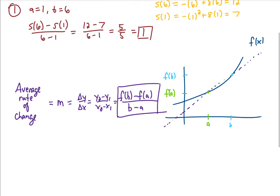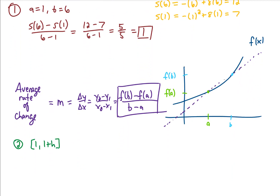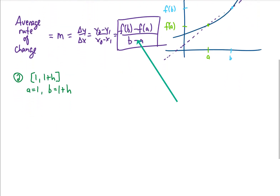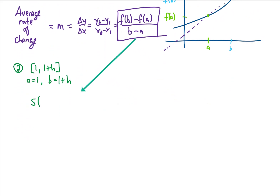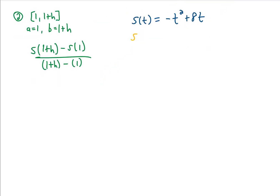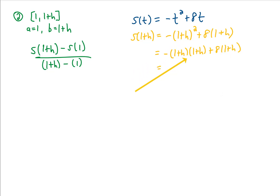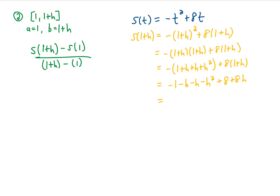For part 2 we're given an interval from 1 to 1 plus h, meaning a equals 1 and b equals 1 plus h. Using our average rate of change formula, our average velocity on this interval is s of 1 plus h minus s of 1, divided by 1 plus h minus 1. We can find s of 1 plus h by replacing t with 1 plus h. Thinking of the quantity 1 plus h squared means we need to FOIL it out, then distribute the negative and the 8 through their respective parentheses, and combine like terms to get our result for s of 1 plus h.